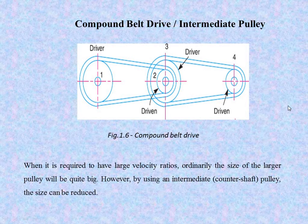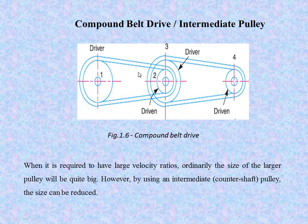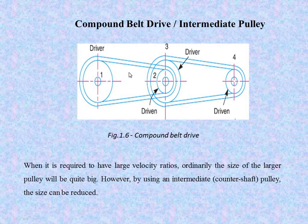When a large velocity ratio is required, ordinarily the size of the larger pulley will be quite big. However, by using an intermediate — that is, a countershaft pulley — the size can be reduced. By using this compound belt drive, we can achieve the required large velocity ratio while keeping the pulley size minimum. If we use this intermediate or compound belt drive, the pulleys can be made small.